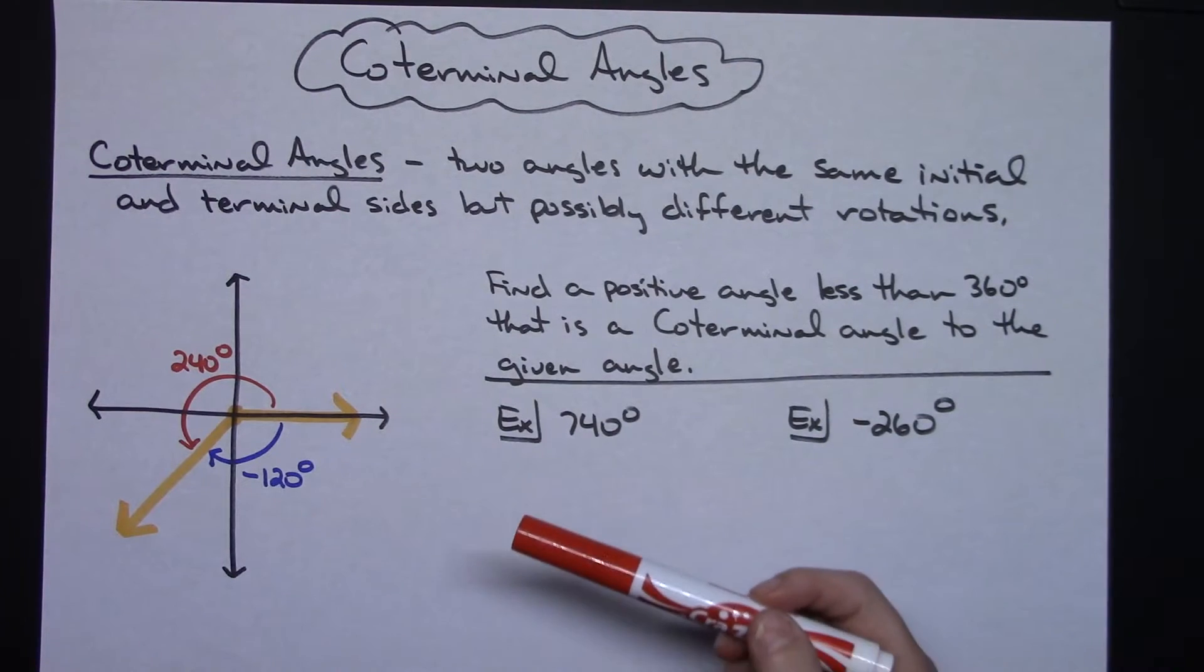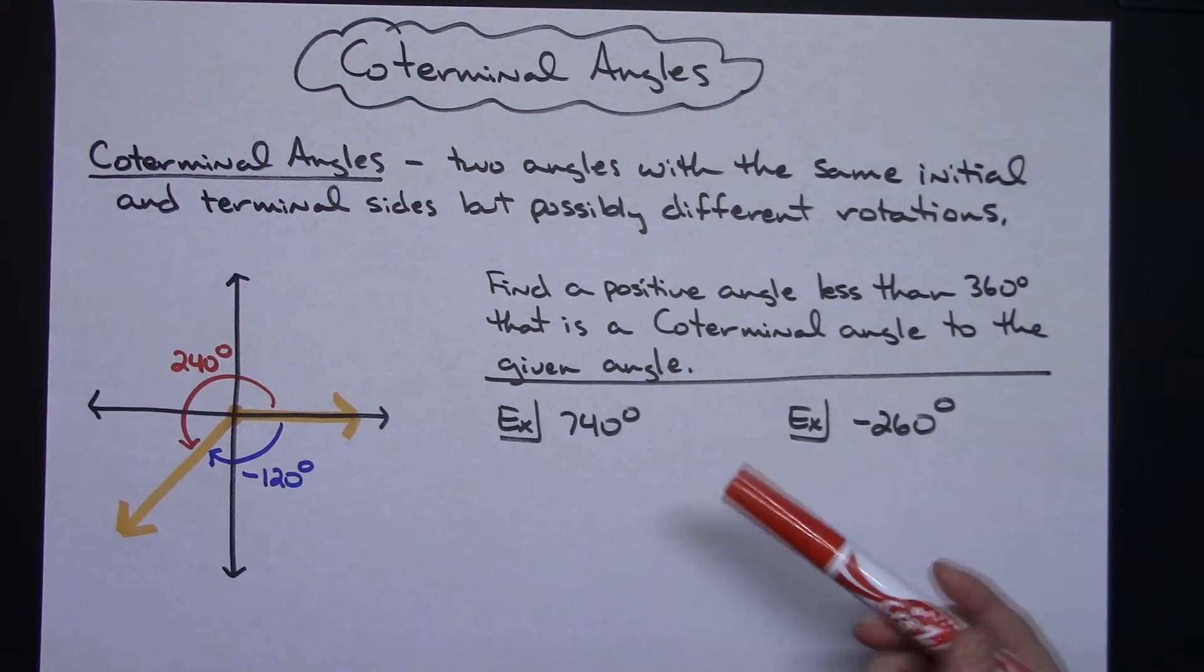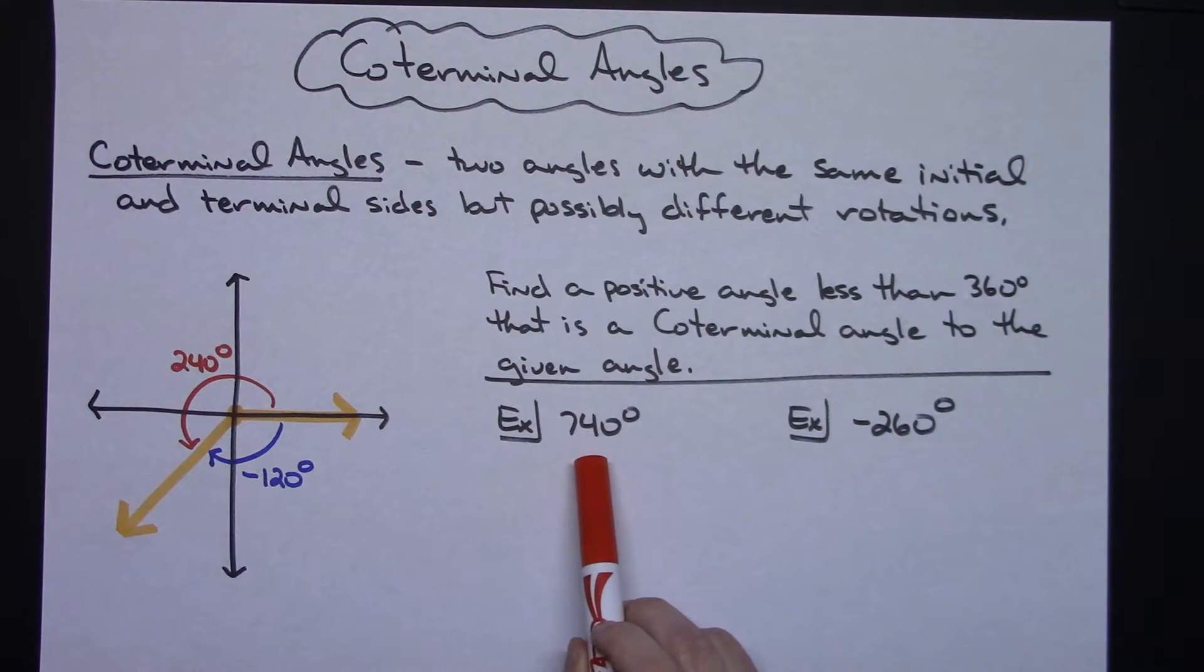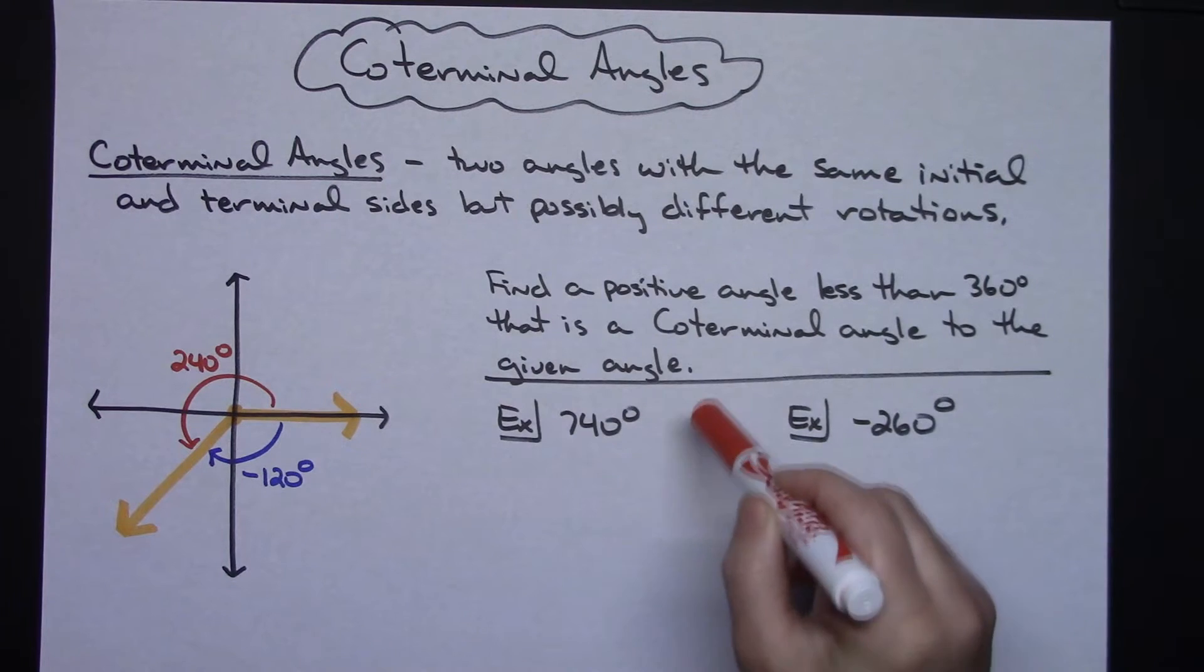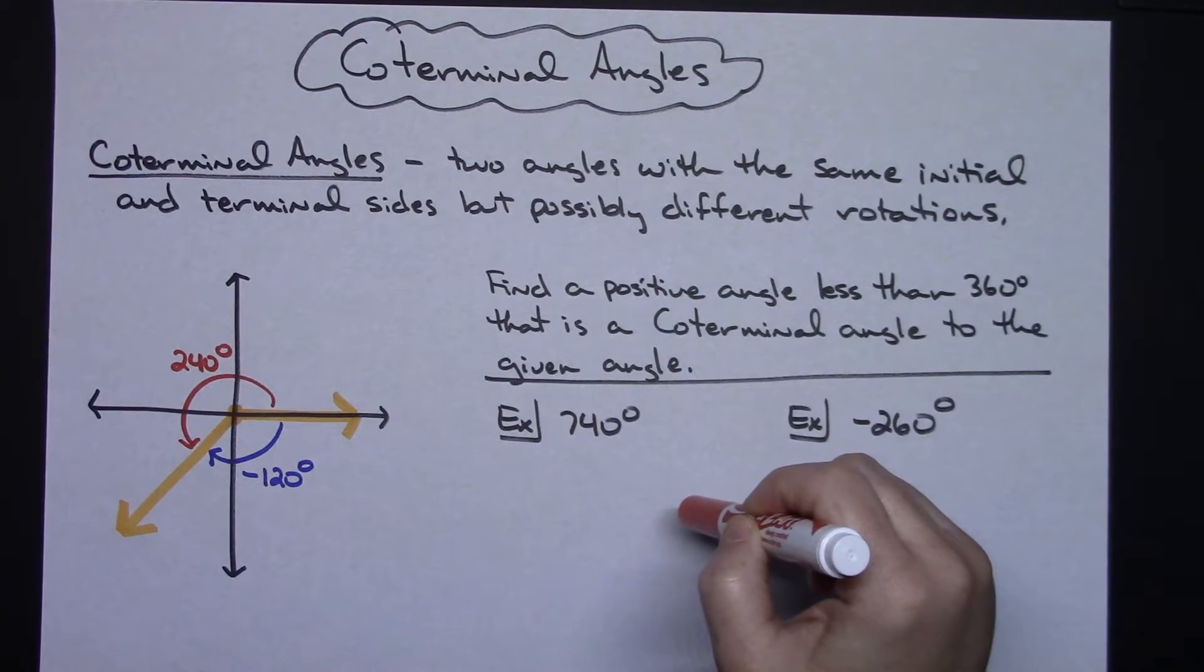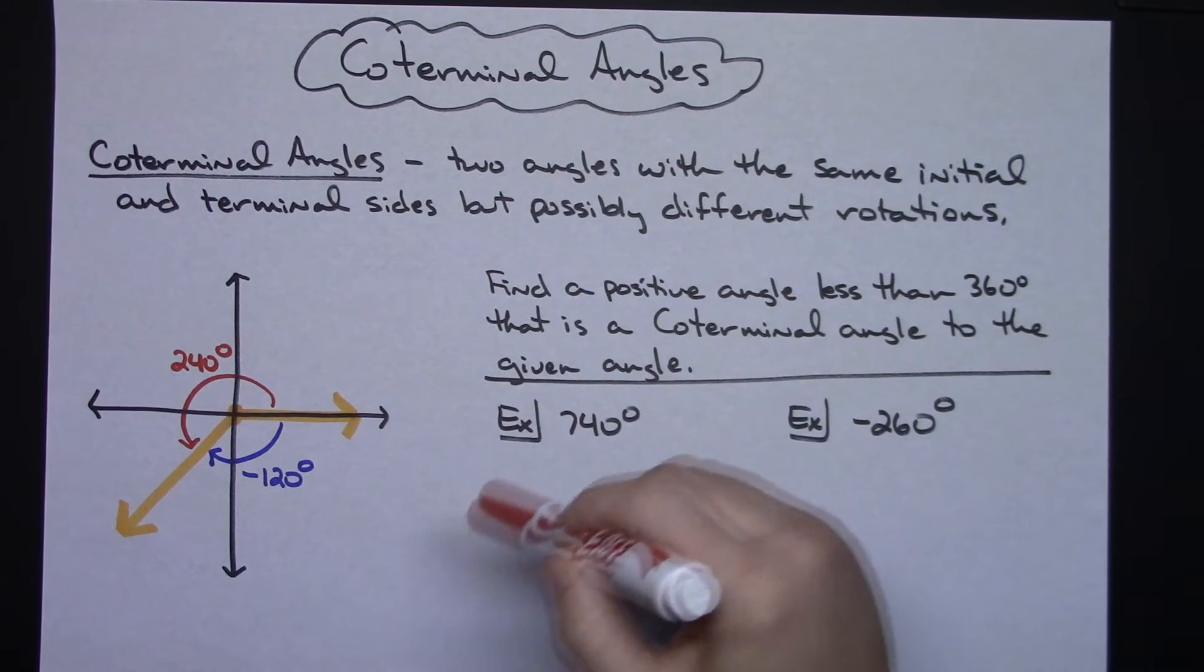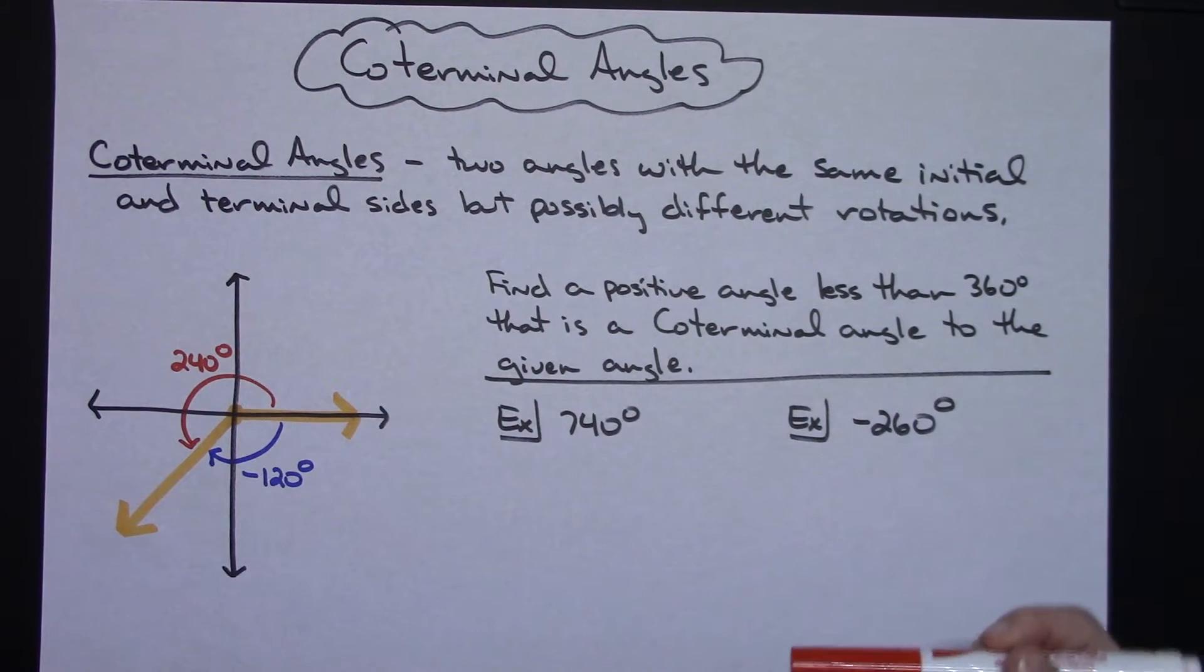And you might have to add or subtract it more than once. So for example in this first example I've got 740 degrees. Well I'm thinking about that. That's one time around the circle is 360. So 740 means I have went around more than once, so that means we're going to have to subtract 360 more than one time.